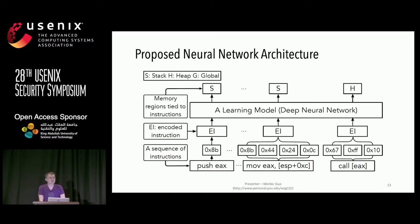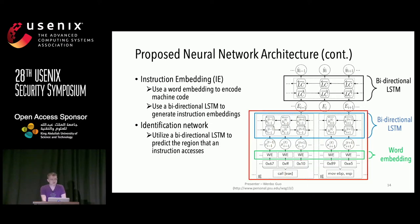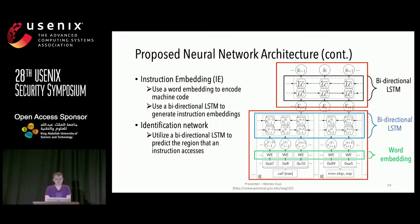We then input this sequence of instruction embeddings into a classifier and obtain the predicted region for each instruction. Technically, our network contains two parts. The first part is an embedding network. It starts with a word embedding mechanism that transforms discrete instructions into continuous values. We then transform each instruction into an embedding using a bi-directional LSTM. The second part of our network is a classification model, also a bi-directional LSTM. It takes as input the instruction embeddings and outputs the region information for each instruction.